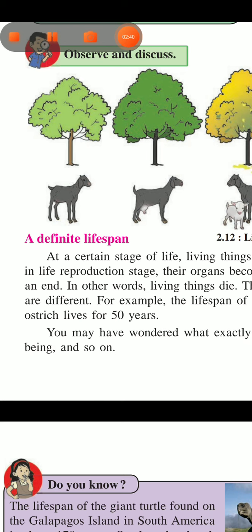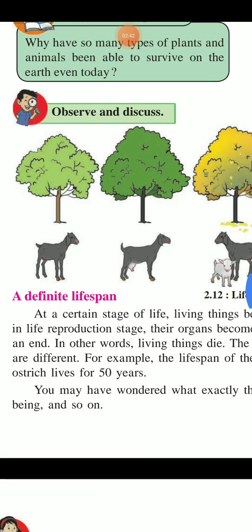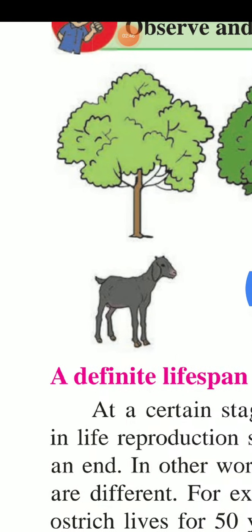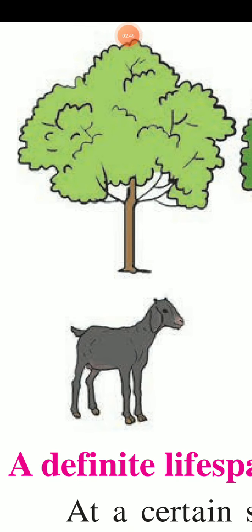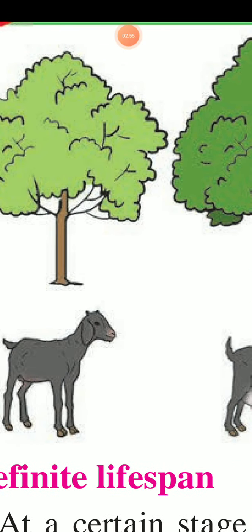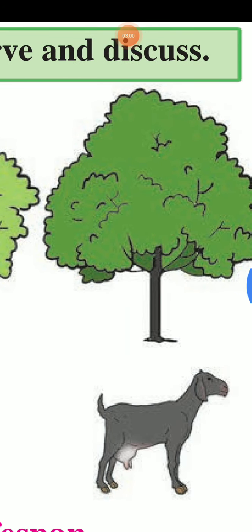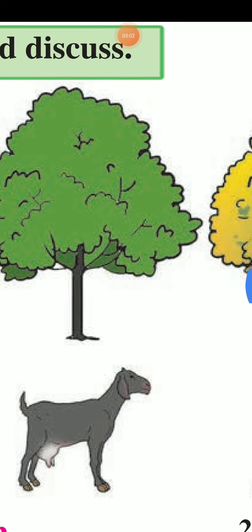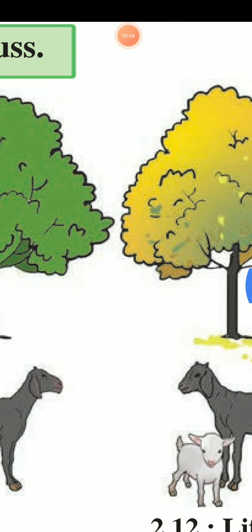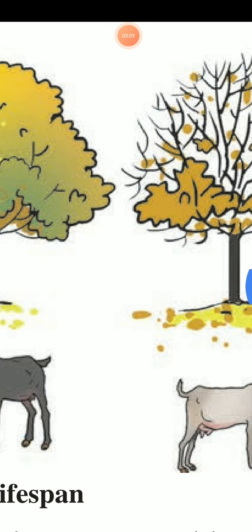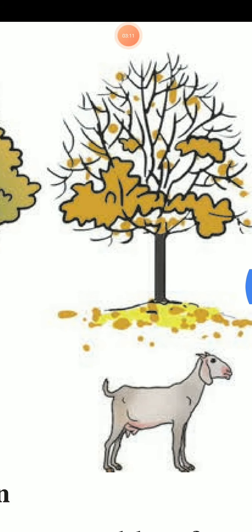You observe this picture. At a certain stage of life, living things become capable of reproduction. Later on, in the reproduction stage, their organs become weak, and still later their lives come to an end. In other words, living things die. The life span of different animals and plants are different. For example, the life span of a dog is about 12 to 18 years, while the ostrich lives for 50 years.